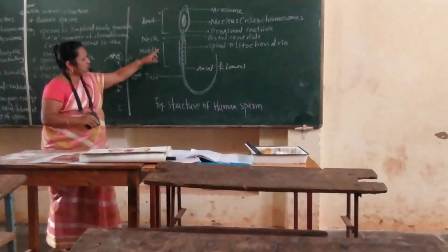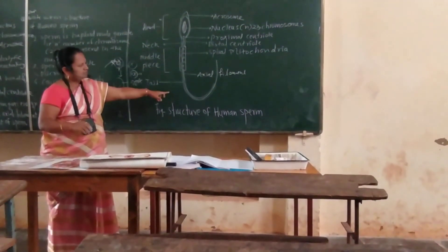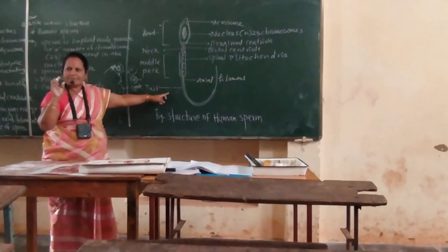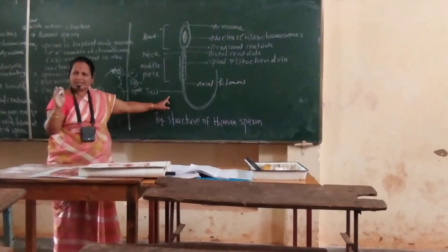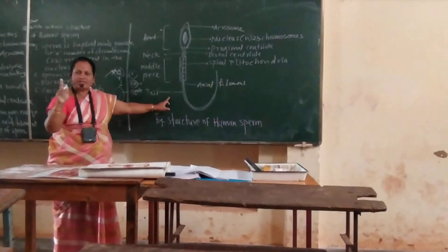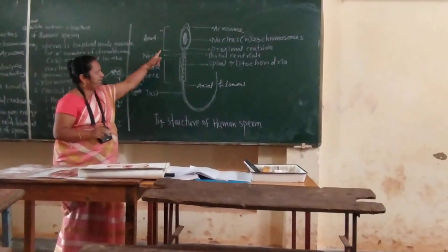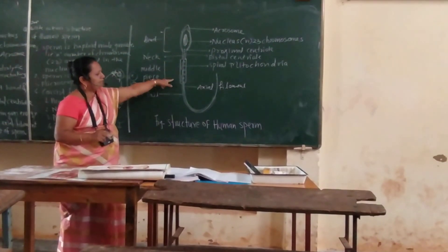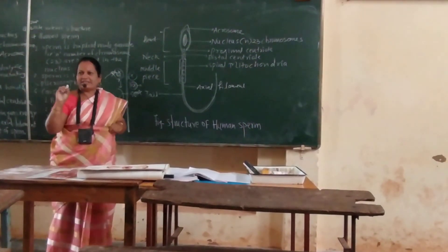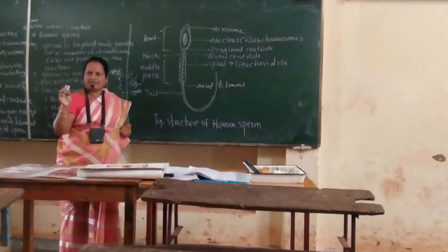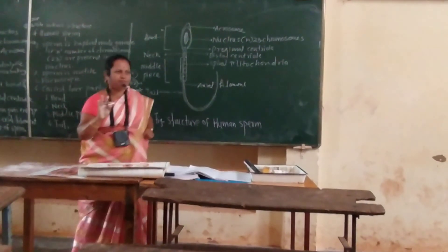Structure of sperm: sperms are minute, microscopic, tadpole-like structures containing a head, neck, and tail. The function of the sperm is fertilization of the egg. Is that clear?